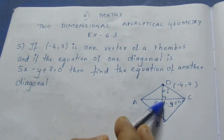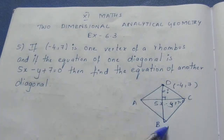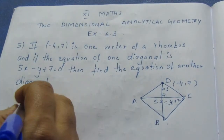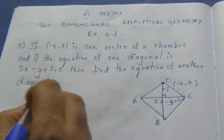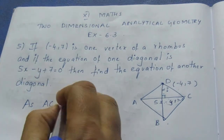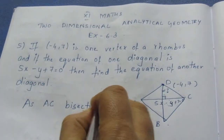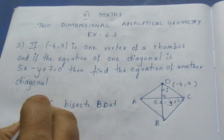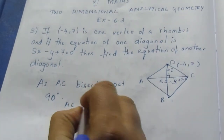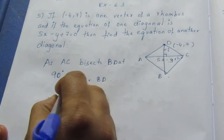The equation of the other diagonal is perpendicular to the given diagonal, because the diagonals of a rhombus bisect each other. As AC bisects BD at 90 degrees, AC is perpendicular to BD. Using the perpendicularity condition, we can find the slope.